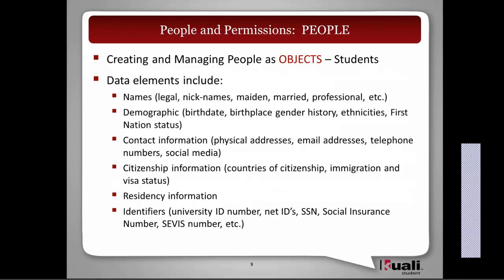There is a large amount of data available and used in different standards that we hope to accommodate. This includes names of various types — legal names, nicknames, maiden, married, professional, etc. Demographic information like birth date, birthplace, gender history, ethnicities, and First Nations status for our Canadian friends. Contact information categorizes all physical mailing addresses, email addresses of various types, telephone numbers, and any type of social media communication.